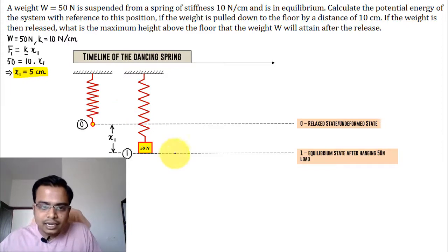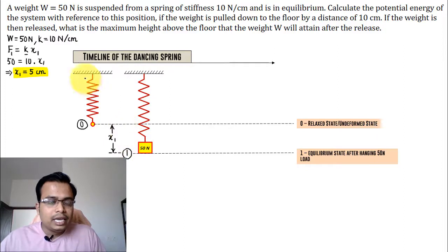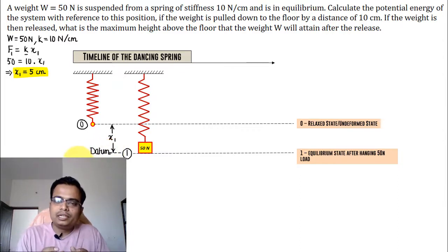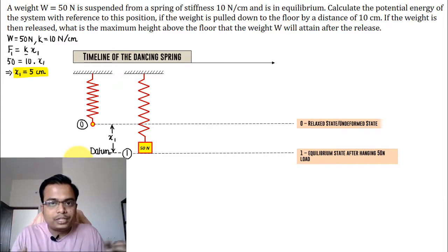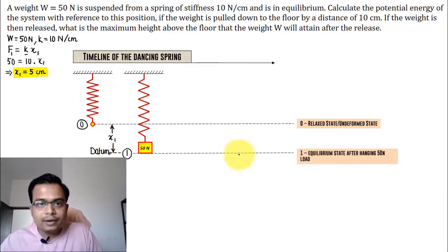Now, calculate the potential energy of the system with respect to this position — the equilibrium position. This position is referred to as the datum. All calculations — whether potential energy due to gravity or potential energy of the spring due to compression or elongation — must be carried out with respect to this reference line.